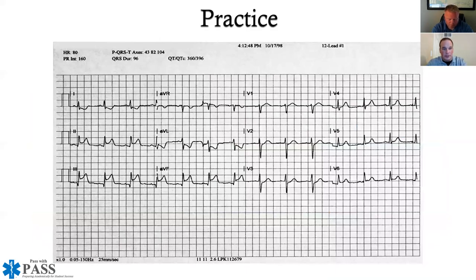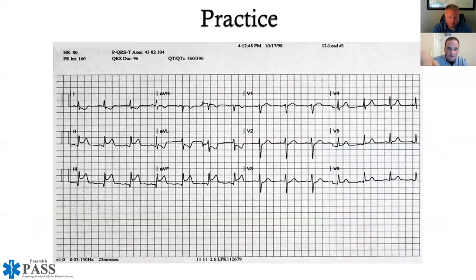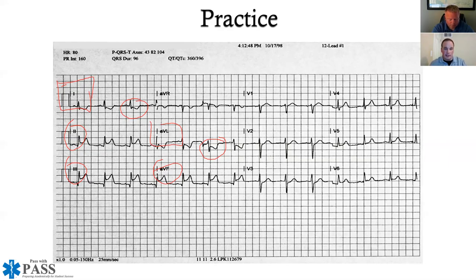Looking at the same strip again: ST elevation in leads II, III, and AVF confirms an inferior wall MI. Inversion in leads I and AVL represents the reciprocal changes in the lateral leads. Those reciprocal changes are not required to call the MI but serve as extra evidence — the inferior wall MI with reciprocal changes in leads I and AVL.